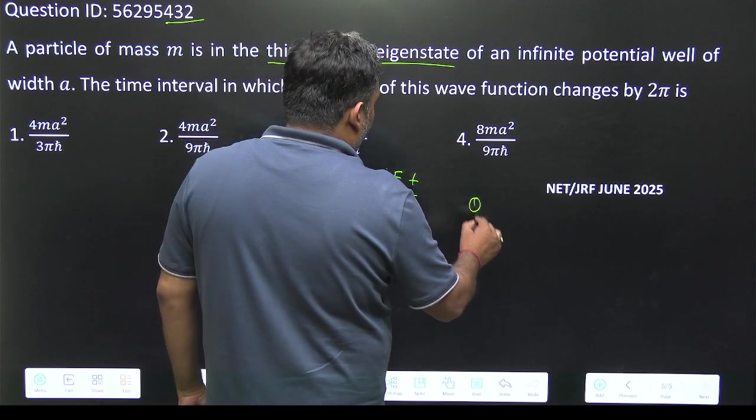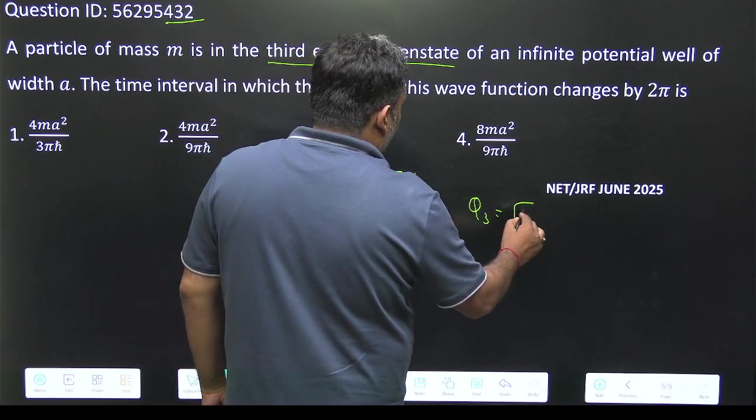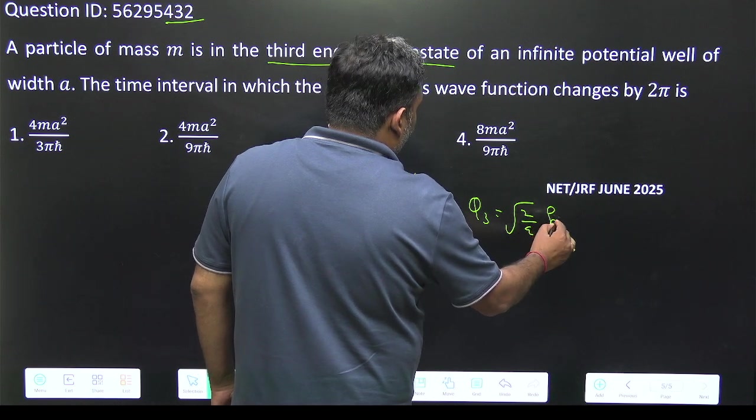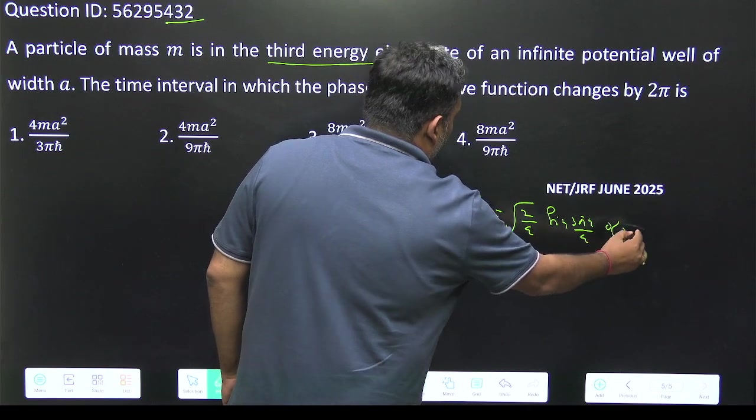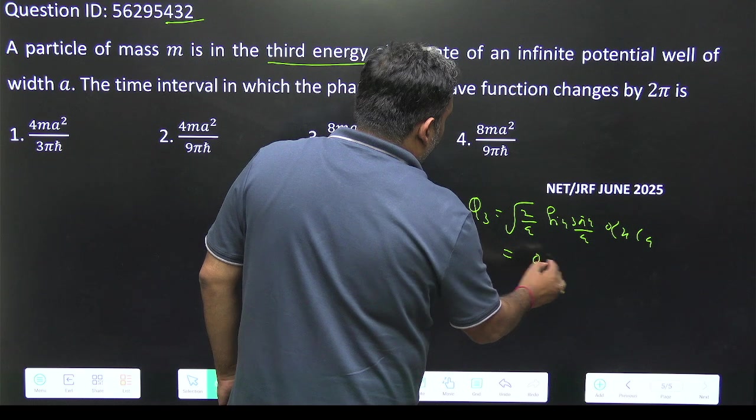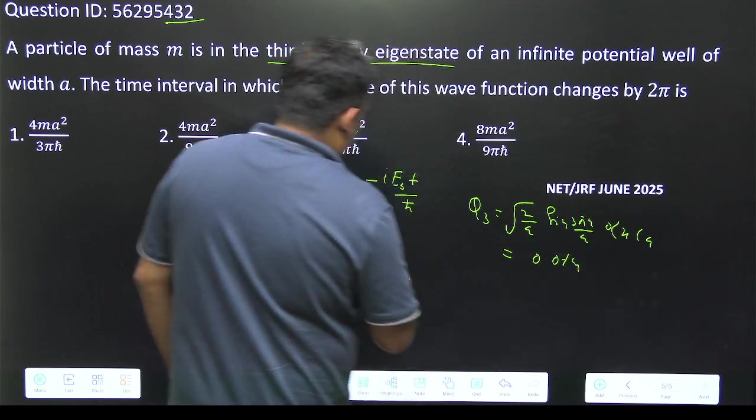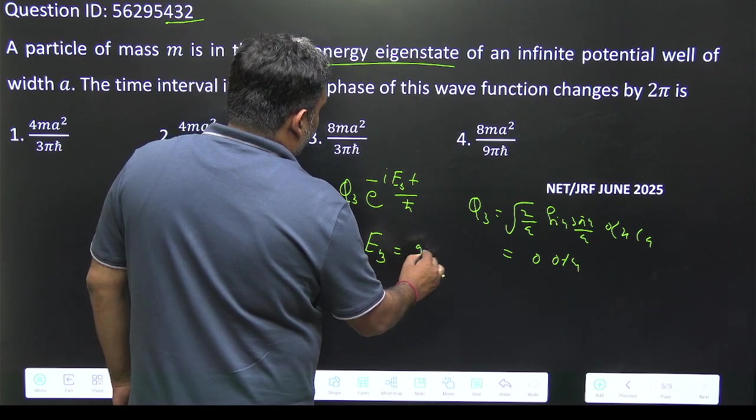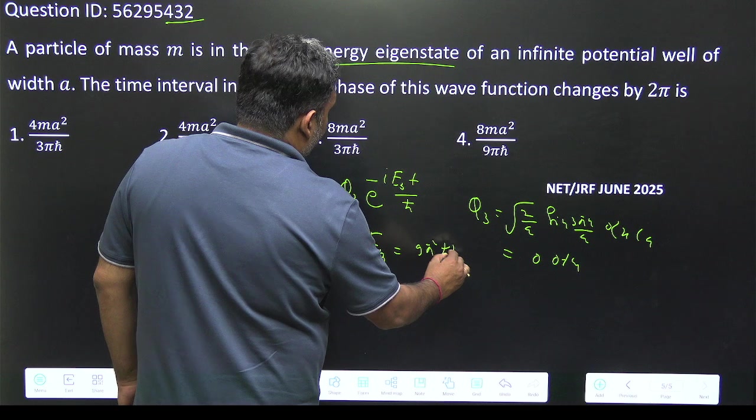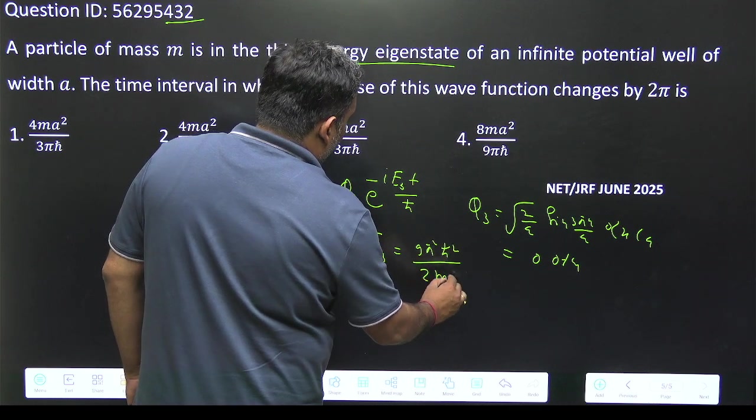And we know what is φ₃. φ₃ is nothing but √(2/a) sin(3πx/a) where x is between 0 to a and 0 otherwise. And what is E₃? E₃ is 9π²ℏ²/2ma².